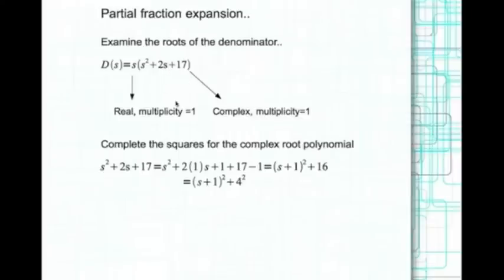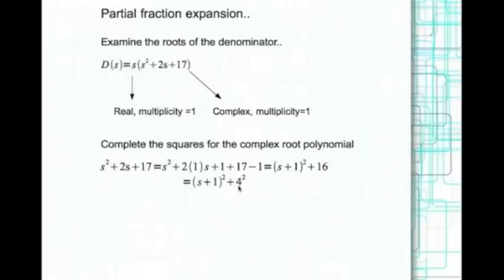Since we have complex roots, we need to complete the square. s² + 2s + 17 can be rewritten as (s² + 2·1·s + 1) + 17 − 1, giving (s + 1)² + 4². This matches the form (s + a)² + ω², where a = 1 and ω = 4.